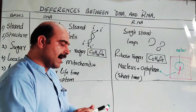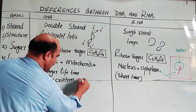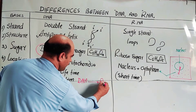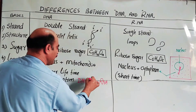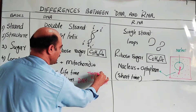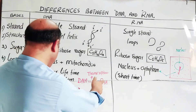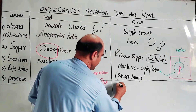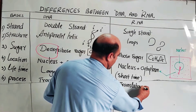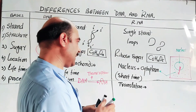DNA produces RNA through the process of transcription. RNA then produces protein through the process of translation. So: DNA → transcription → RNA → translation → protein.